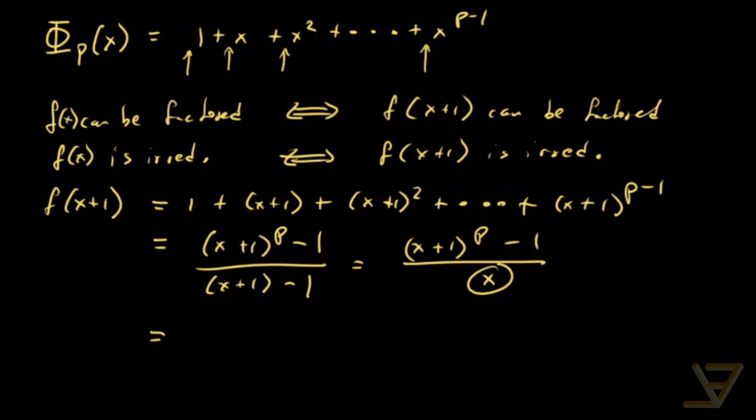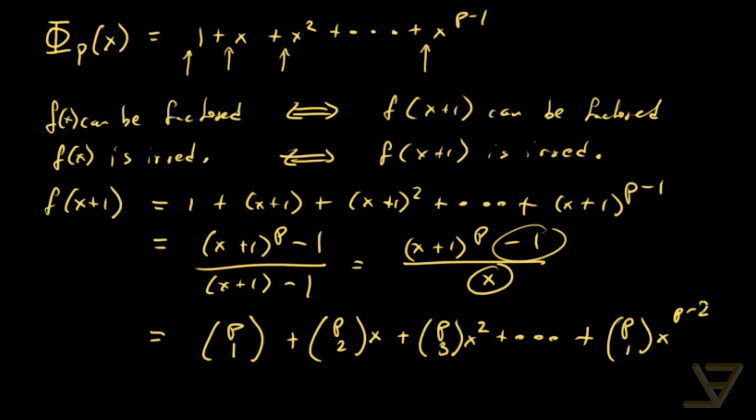But by the binomial theorem, this equals (p choose 1) plus (p choose 2)x plus (p choose 3)x squared, all the way through to (p choose p-1)x^(p-2) plus (p choose p)x^(p-1). Because we're subtracting the minus one, so we don't need p choose 0, and we're dividing by x.